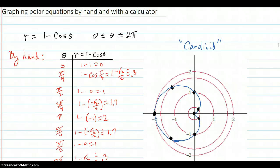Graphing polar equations by hand and with the calculator. So we're going to do this polar equation. R equals one minus cosine theta.